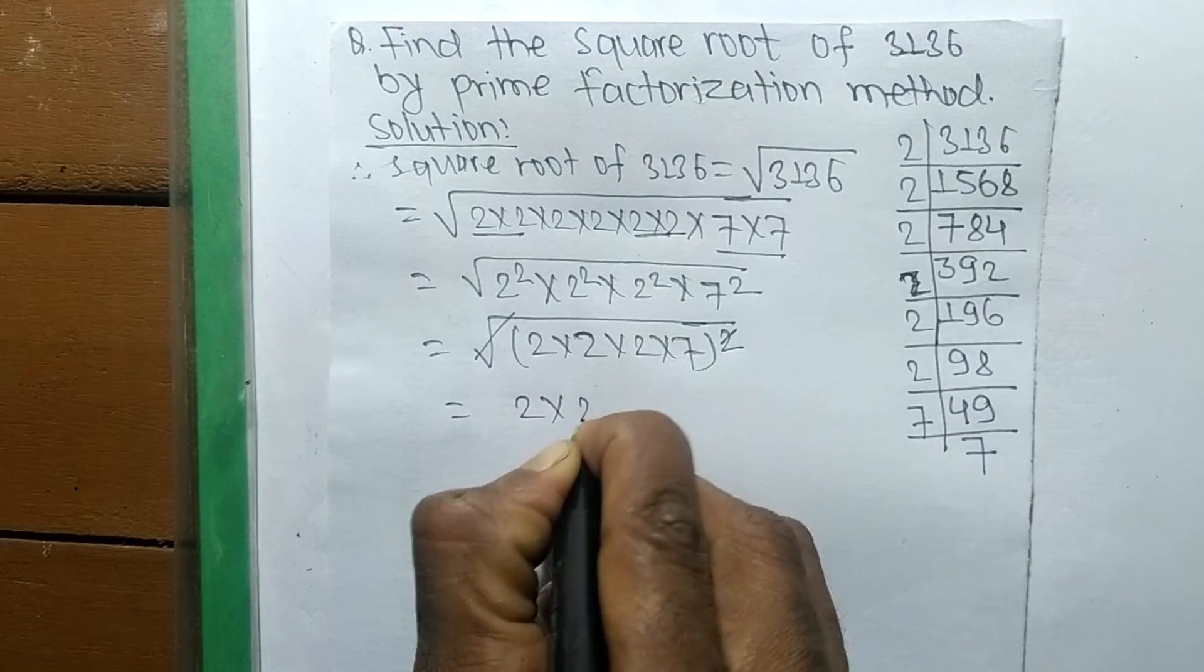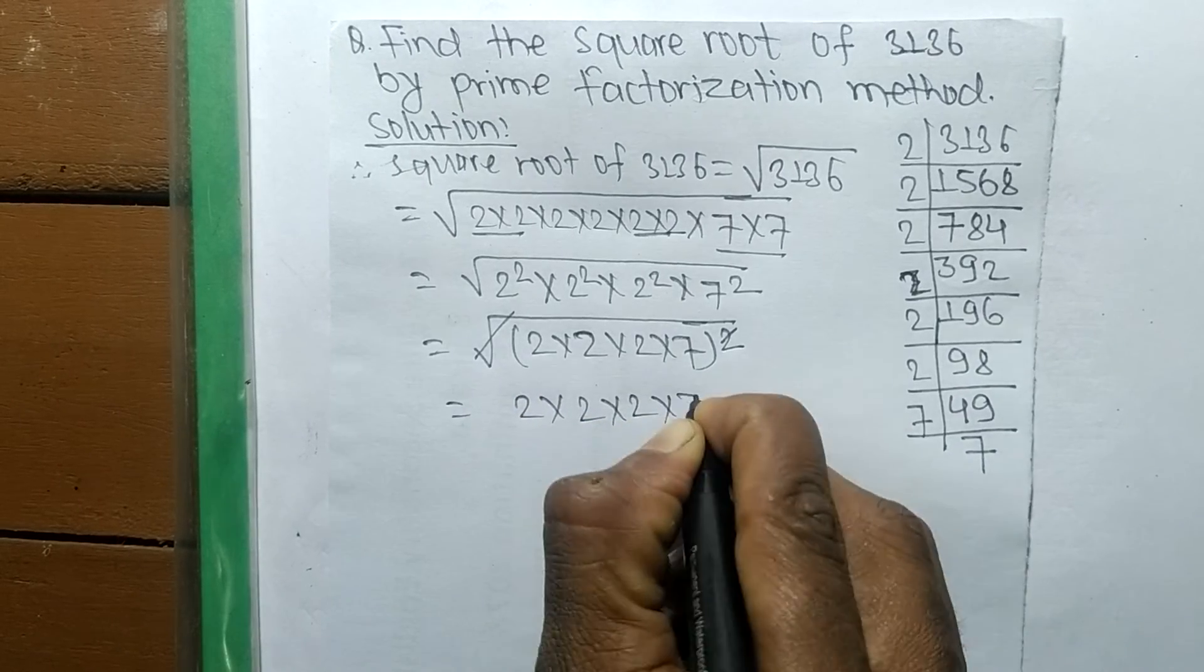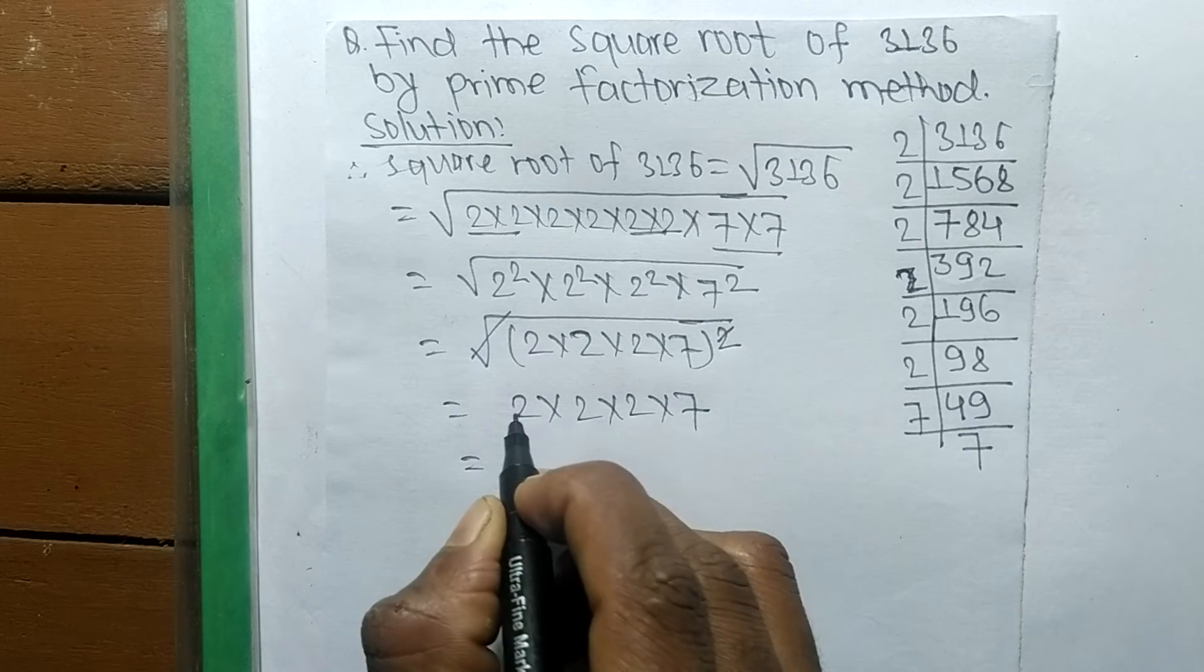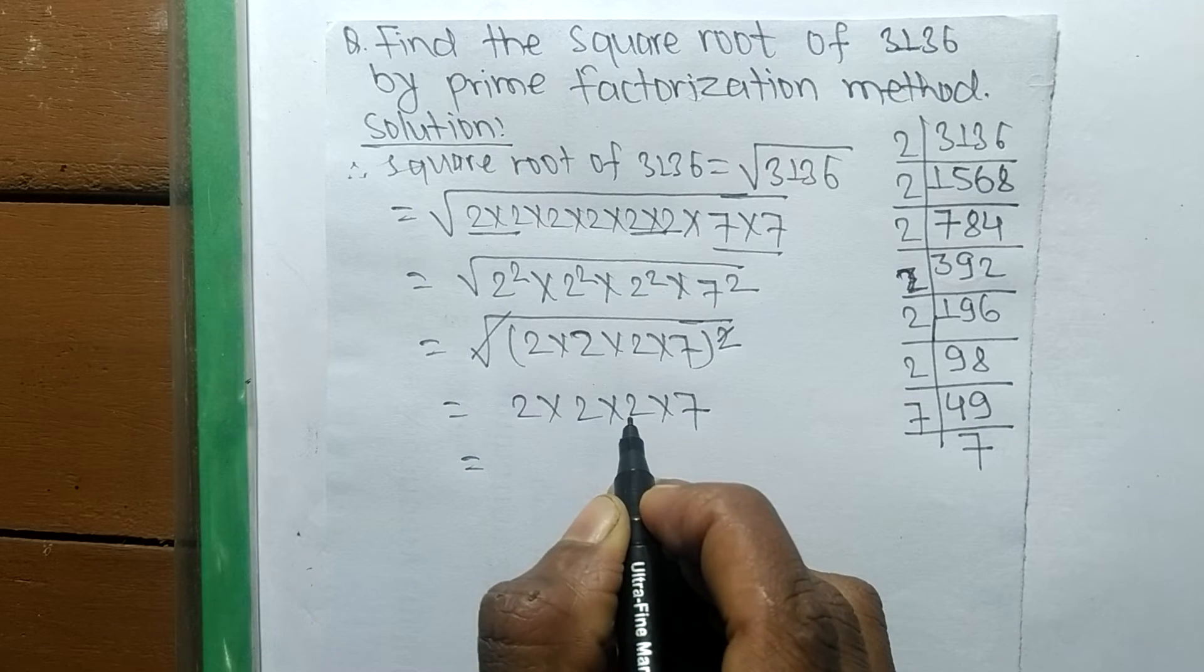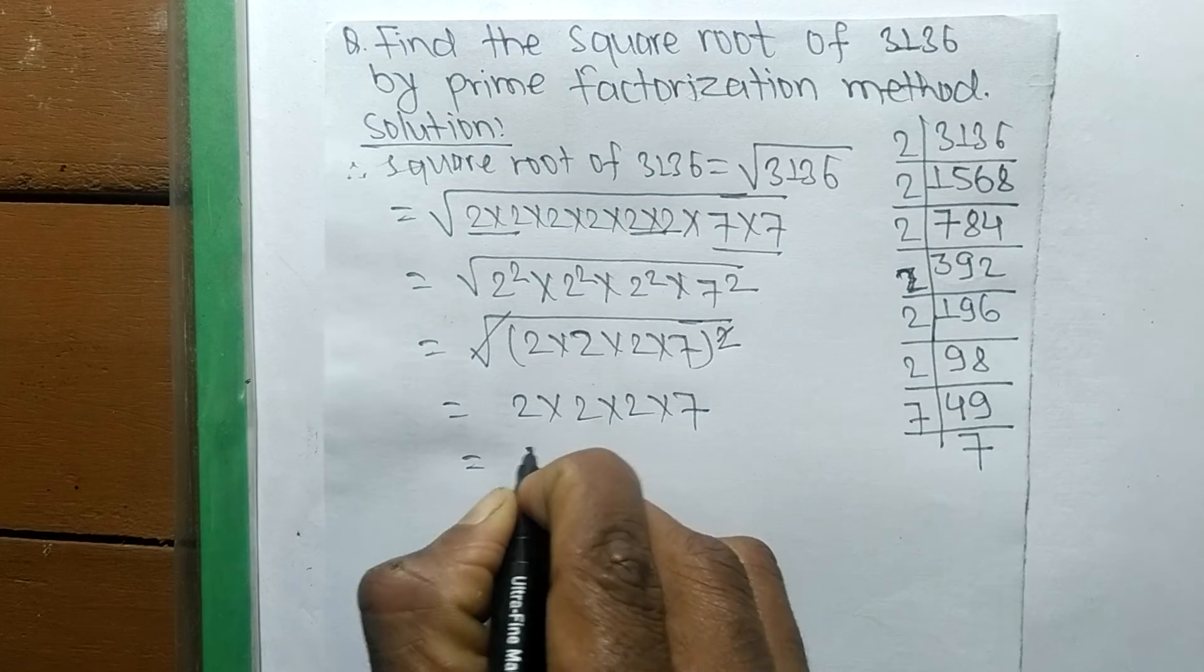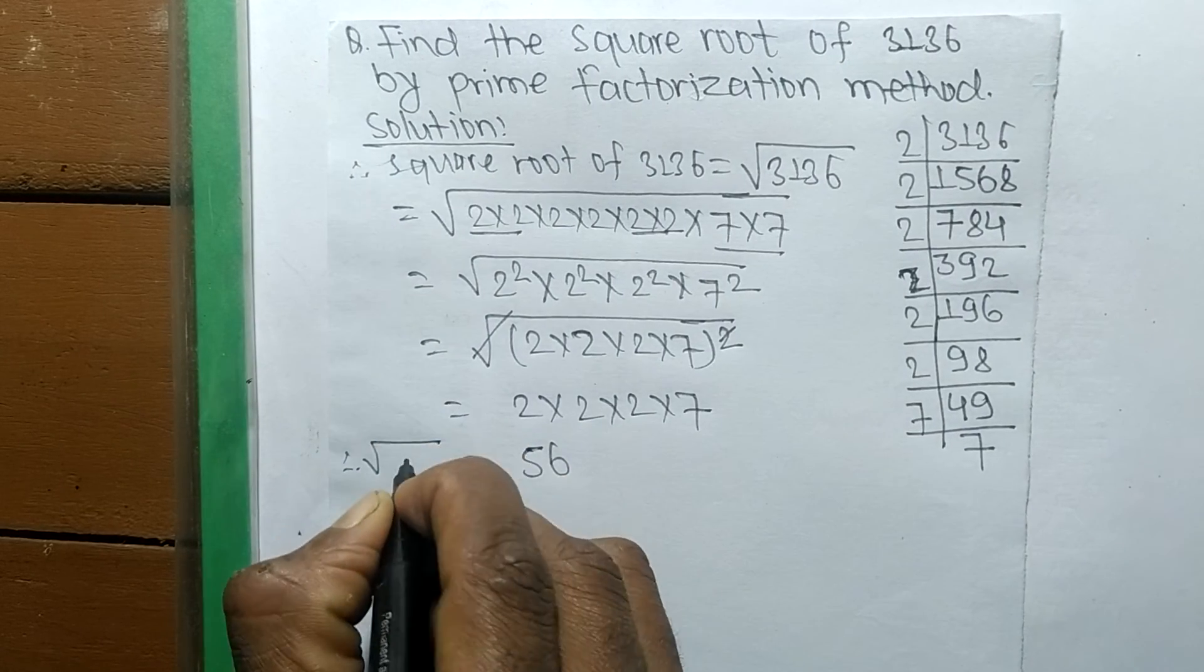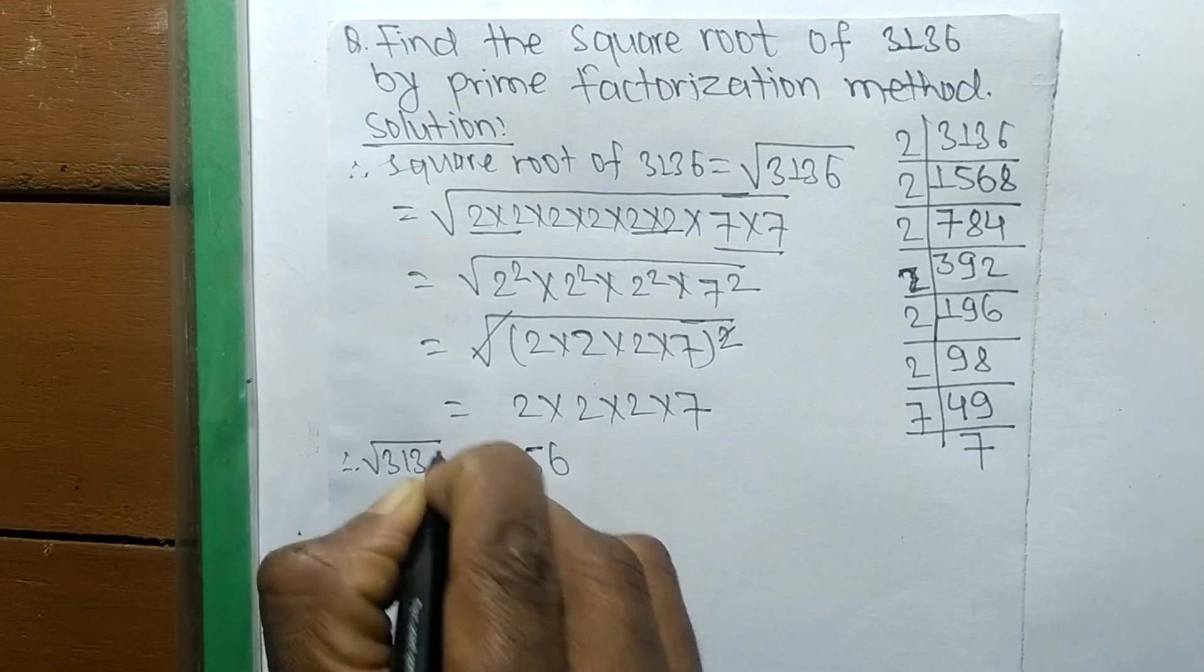So the remaining part is 2 into 2 into 2 into 7. 2 times 2 is 4, 4 times 2 is 8, 8 times 7 is 56. Therefore the square root of 3136 is equal to 56.